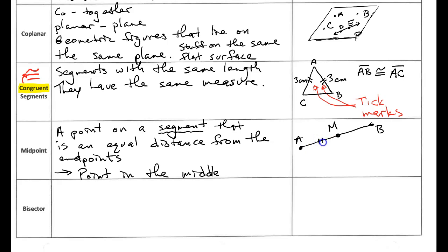So again I'm just going to use two little lines. You can use whatever you want. So I can see right in my picture here because of these tick marks, these tick marks tell me that segment AM and segment MB are congruent. Which means that M must be right in the middle and M is the midpoint.